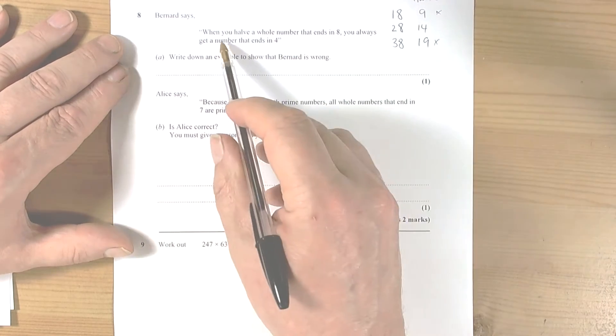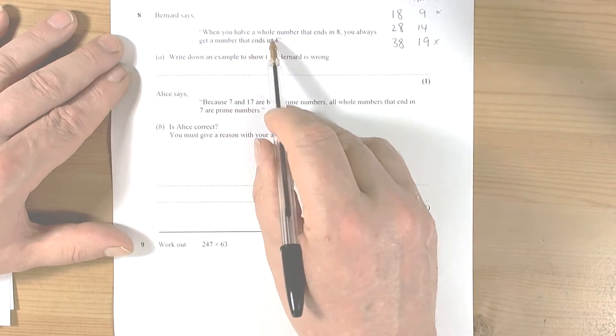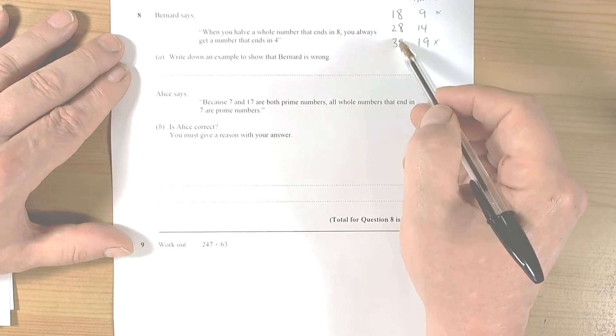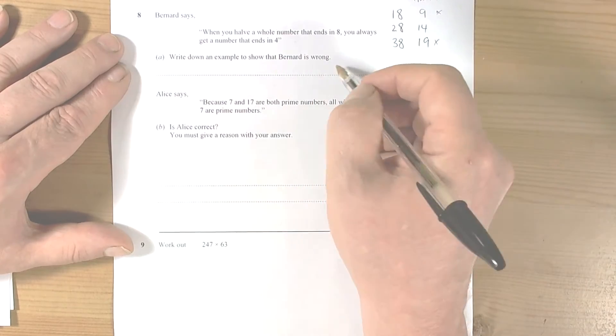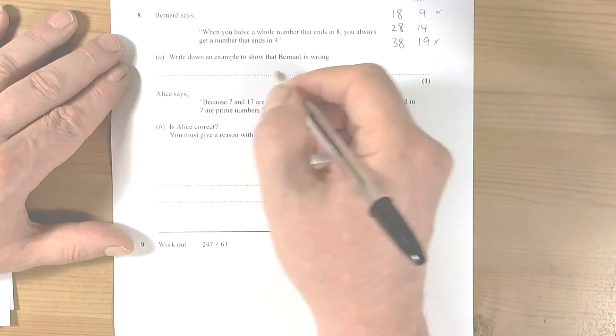If you're not sure what's going on, then always just try things. It says when you halve a whole number that ends in eight, so write down some whole numbers that end in eight, halve them, and see what happens. Just try something guys. If you're not sure what's going on, just follow the information and see what happens.